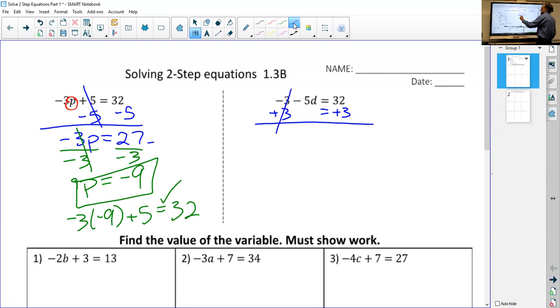So these cancel, bring the rest down. Minus five times D equals 32 plus three is 35. Let's keep the same colors, go green. So to get rid of negative five times D, we do the opposite, which is to divide by negative five. These cancel, we get D equals negative seven.